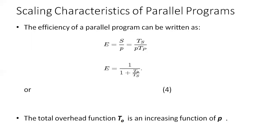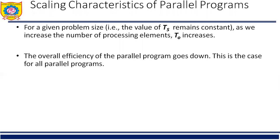First, for a given problem size, the value of TS remains constant as we increase the number of processing elements, but T0 increases. In such a scenario, it is clear from the equation that the overall efficiency of the parallel program goes down. This characteristic of decreasing efficiency with increasing number of processing elements for a given problem size is common to all parallel programs.